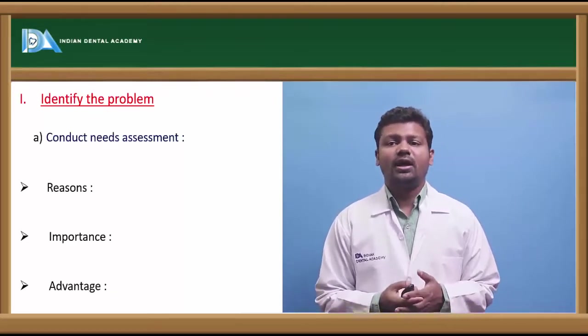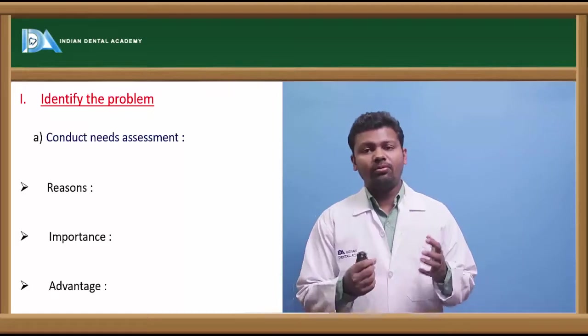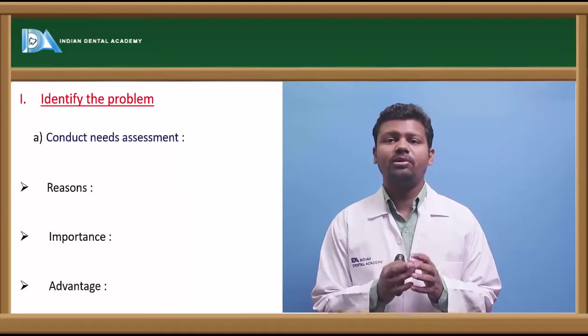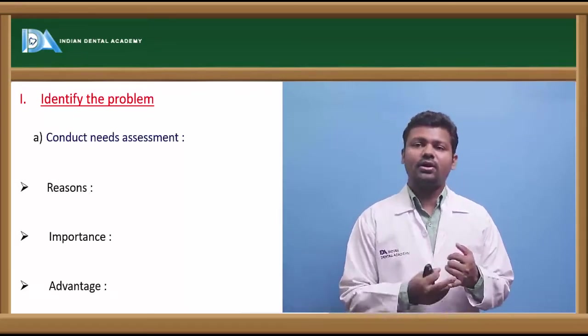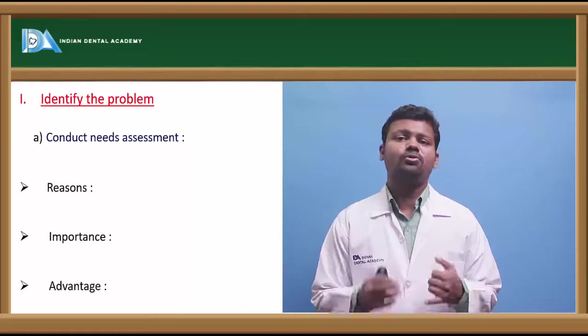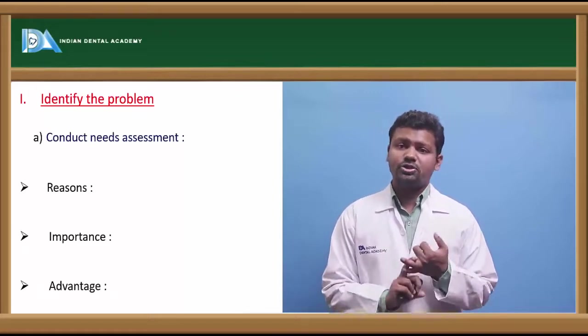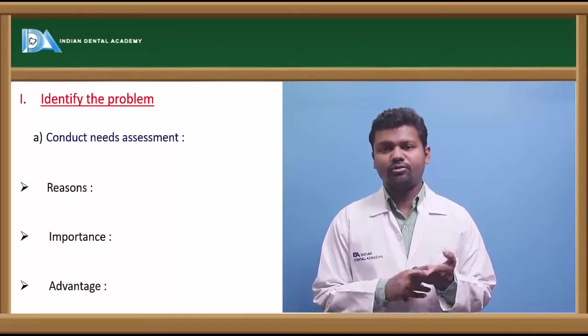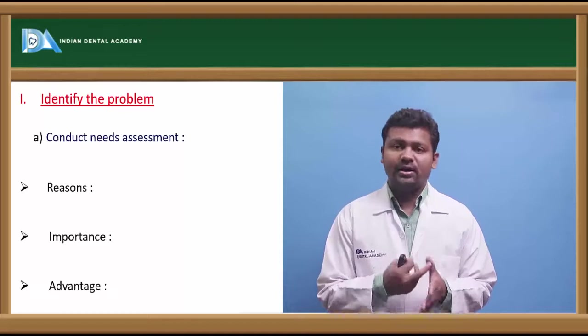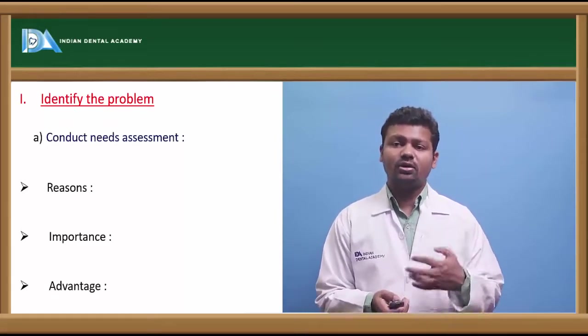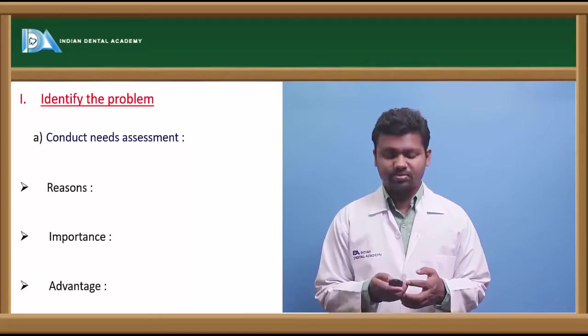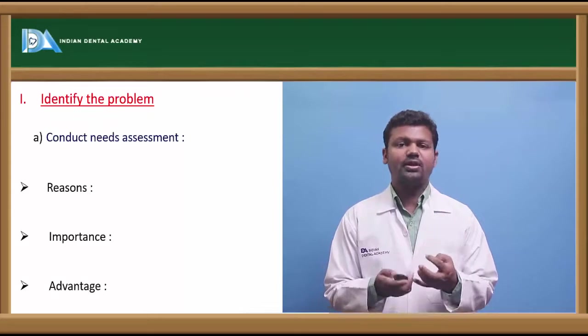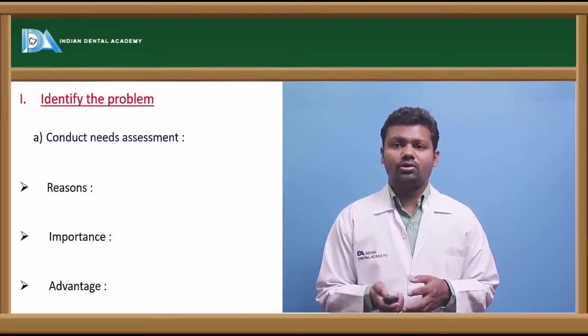Now coming to our first step, identifying the problem. Now before planning we have to understand what is the basic need, what is the problem the people facing in a particular area. For that we have to conduct a needs assessment. For needs assessment you have to know the population size, educational status, nutritional value, whether the fluoride supplements has been provided to the water, whether the water fluoridation is there, age, socioeconomic status, all the reasons we need to conduct a needs assessment. And the need of the community, what exactly they want and what should we can do to identify the problem.